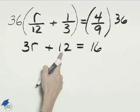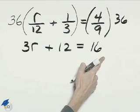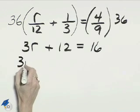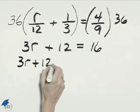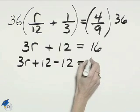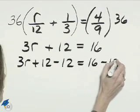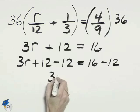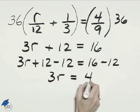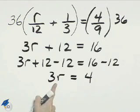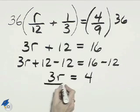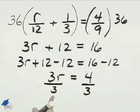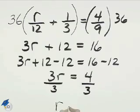Now all we need to do is move 12 over to the right-hand side, and we'll have 3R by itself. So we'll have 3R plus 12, and then subtract 12, equals 16 minus 12. On the left is just 3R, and on the right is 4. Now to get R by itself, we'll divide both sides by 3. 3 divided by 3 is 1, that leaves us with R.